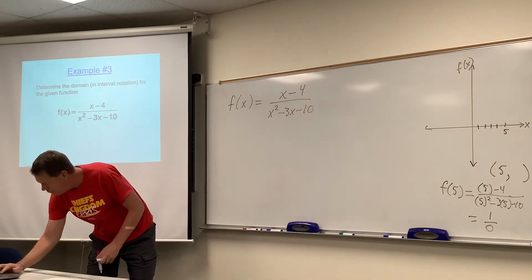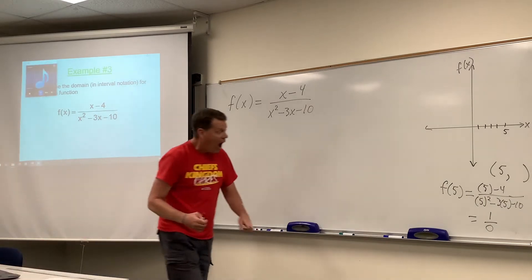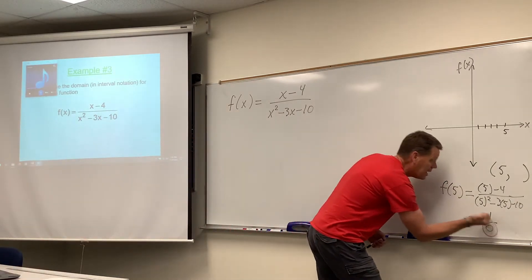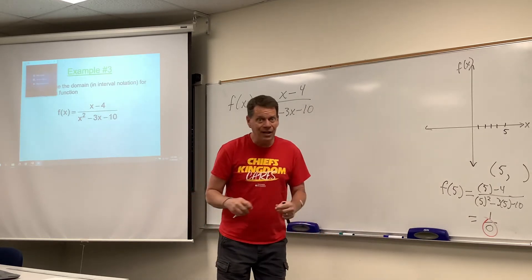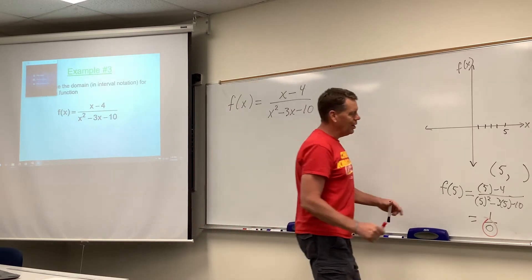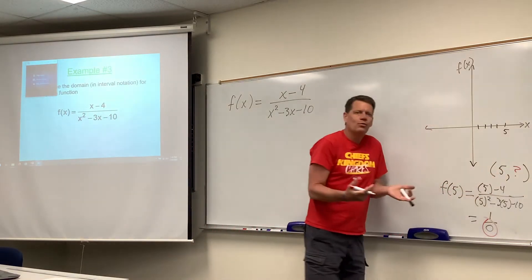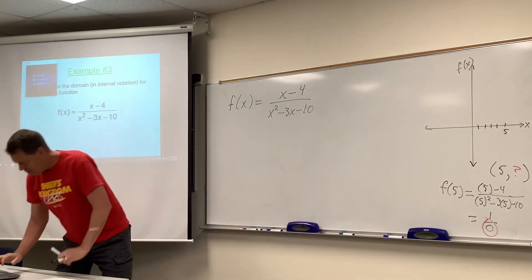And so we have one over zero. And hopefully when one over zero appeared on the screen, you all went, you can't divide by zero. That's undefined. So see, sticking five in for x caused a problem, right? There's no value of y that goes with it.